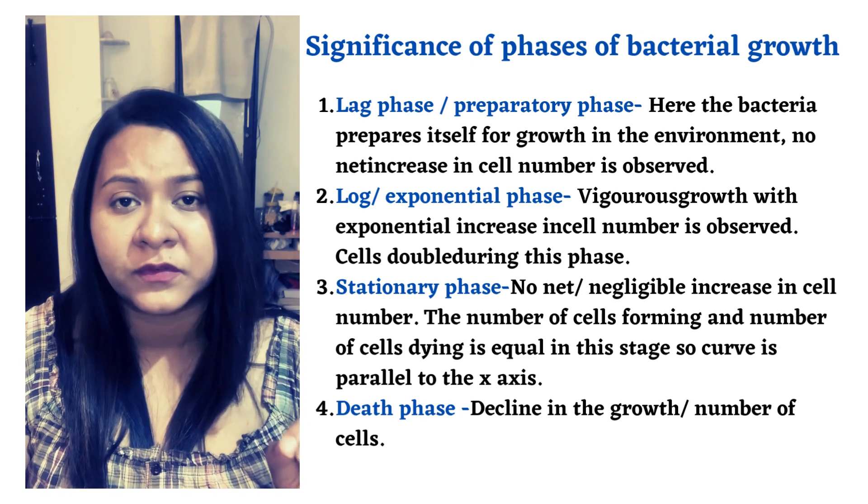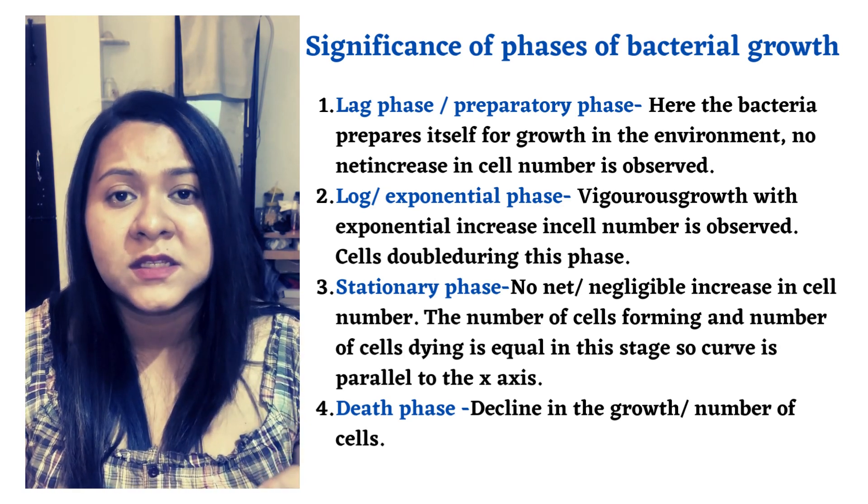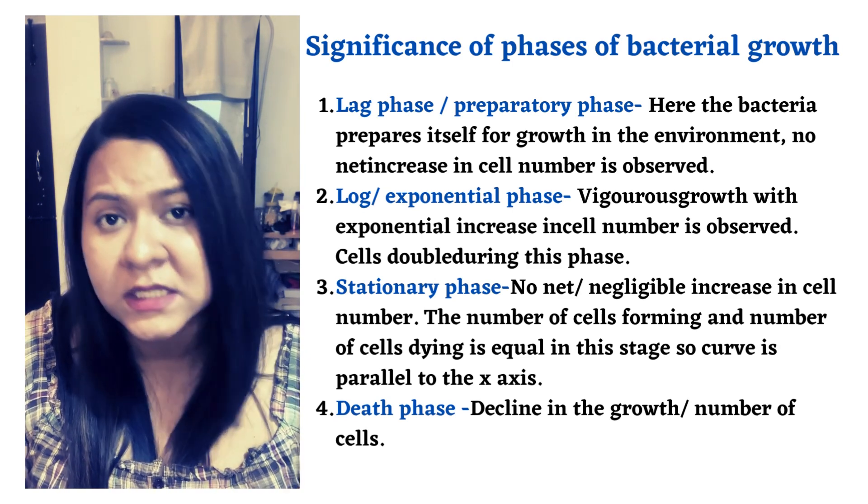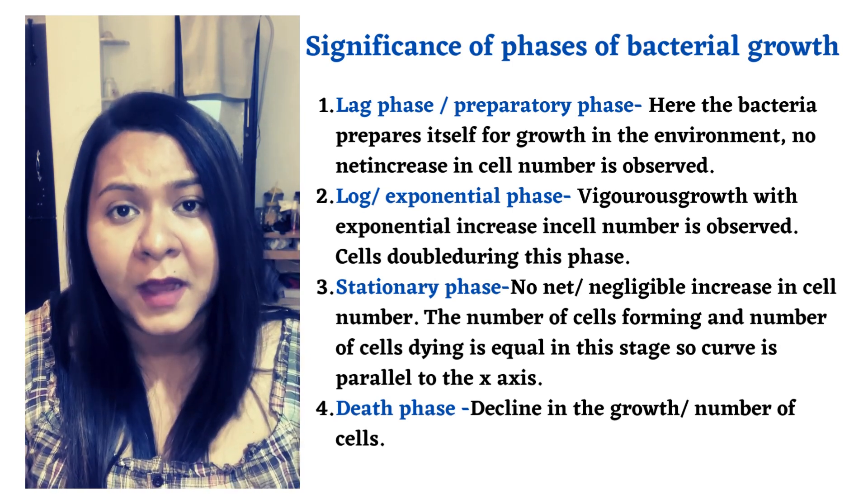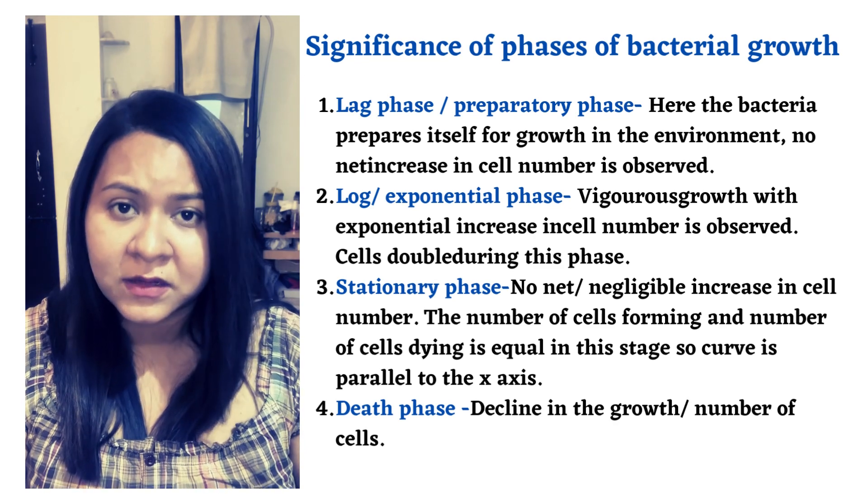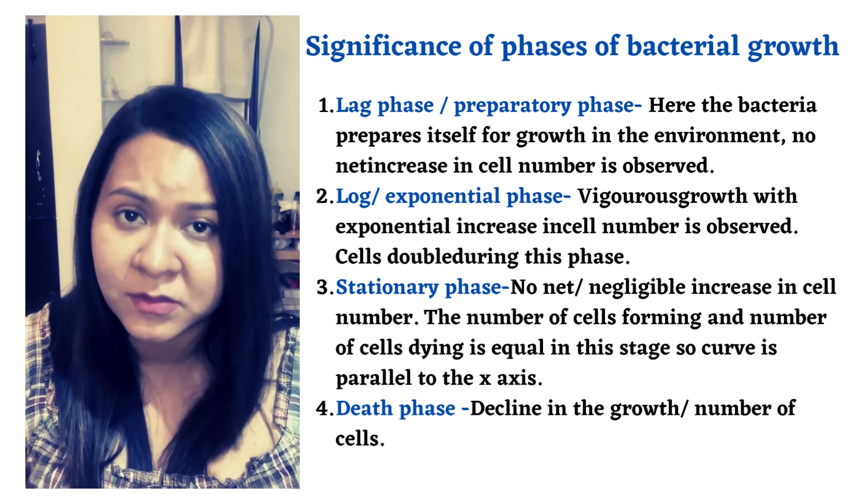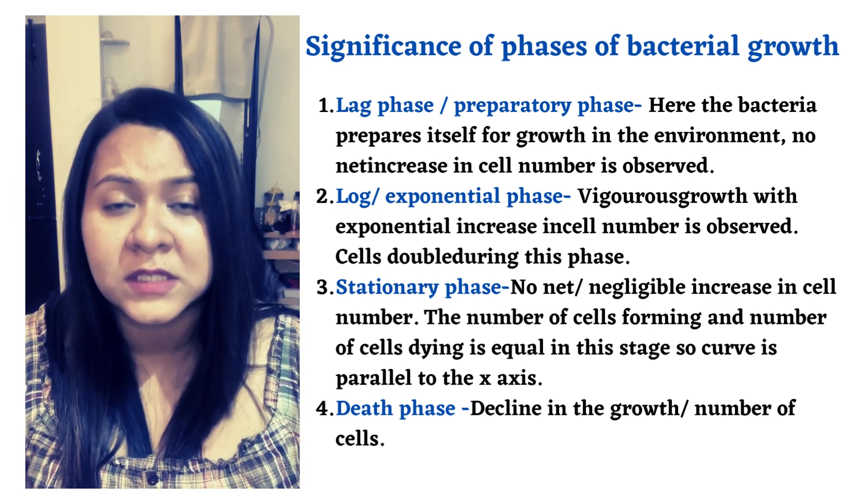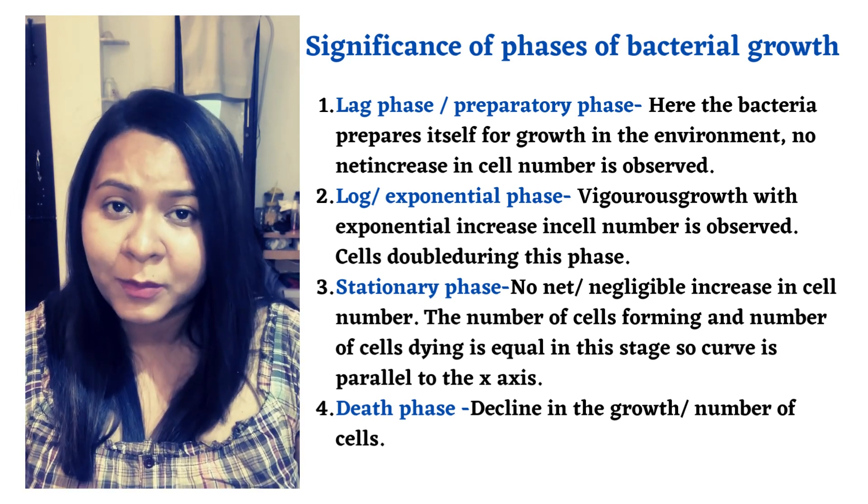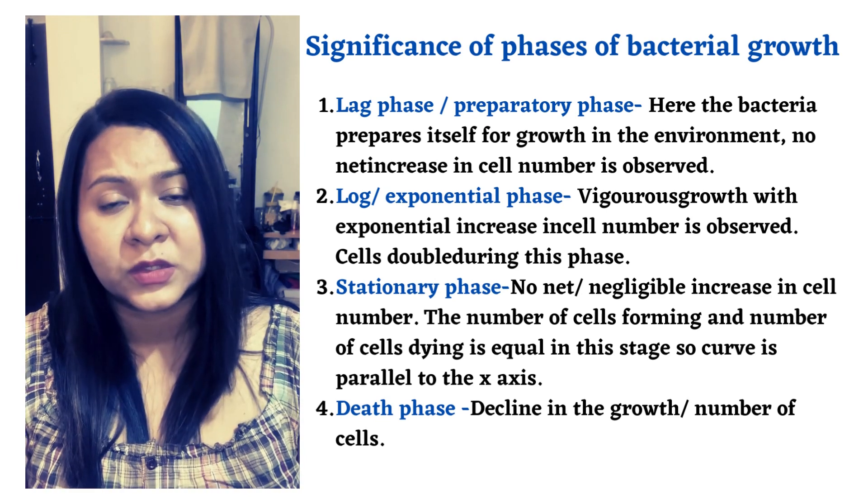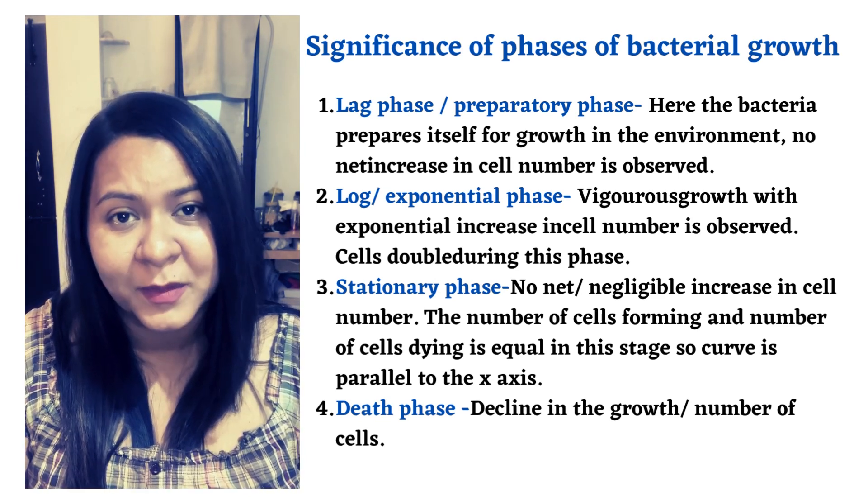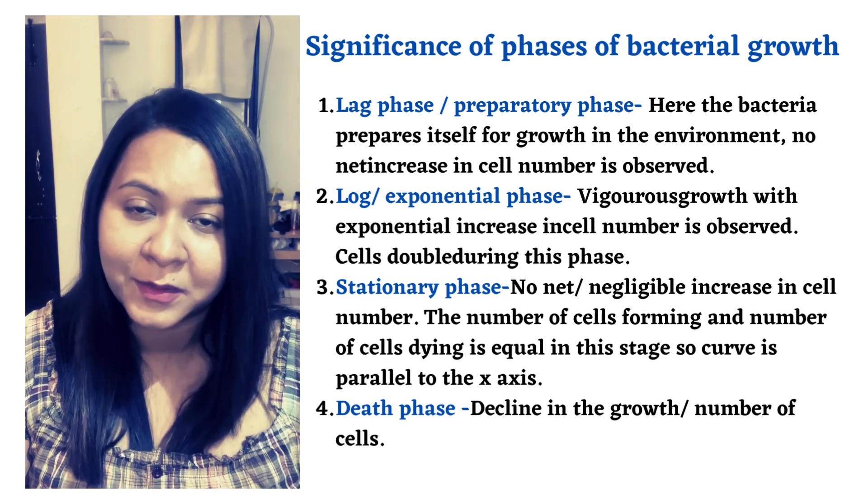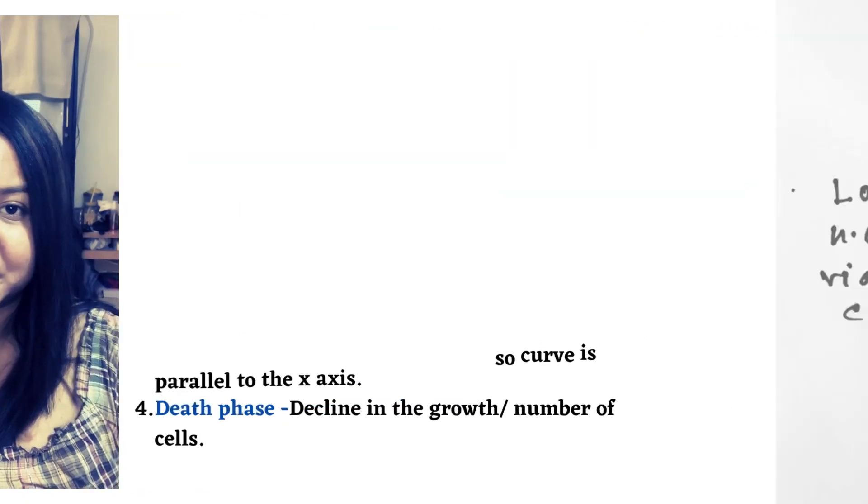The death phase only stops after a certain time because the number of viable cells will decrease to the minimum, but the cell mass still remains and the optical density still remains. So there is no total decrease or decline in the death phase. So that's all about the four phases of the bacterial growth curve, and now we will see the mathematical expression behind the generation time, that is the doubling time of the bacteria.